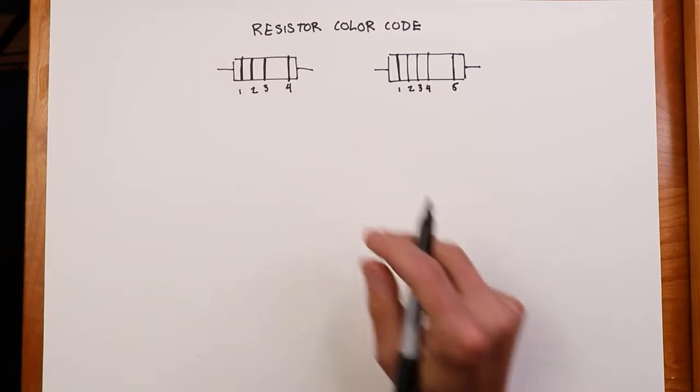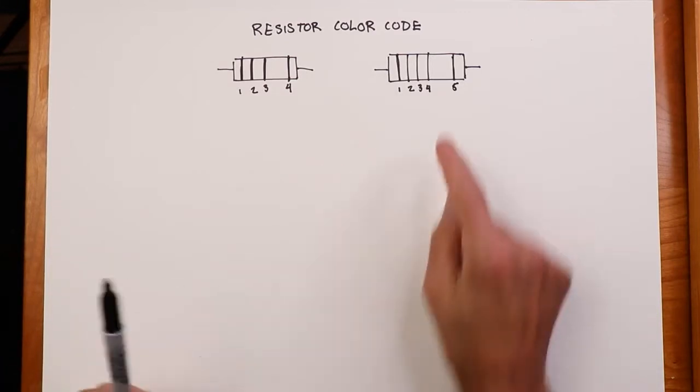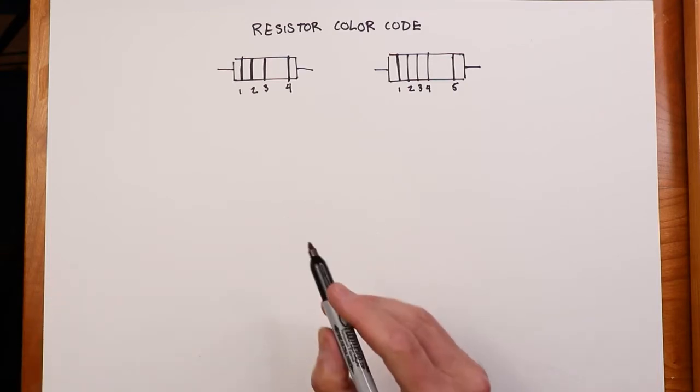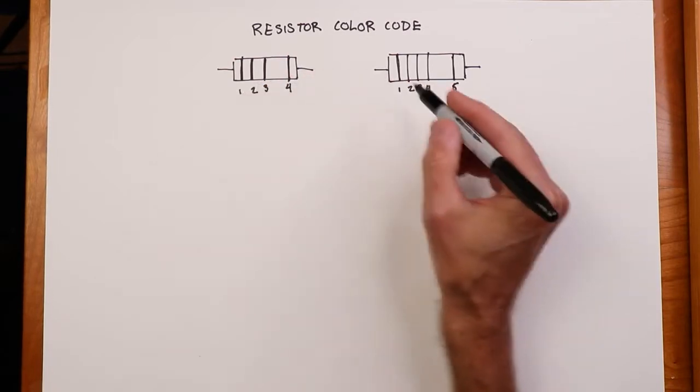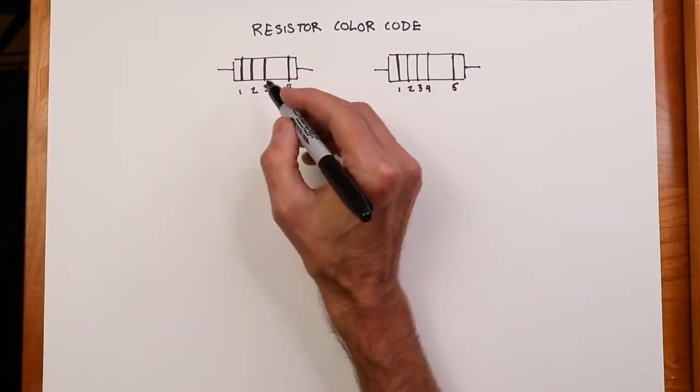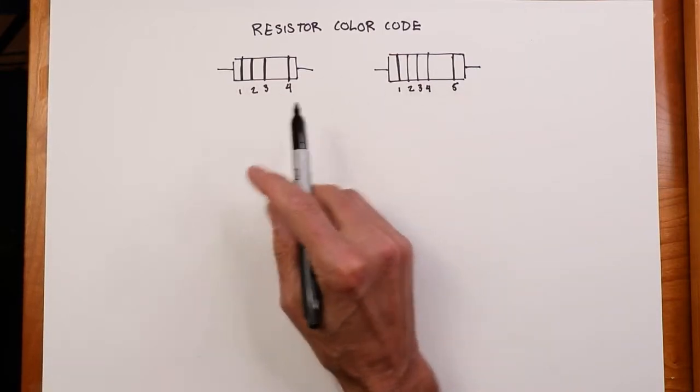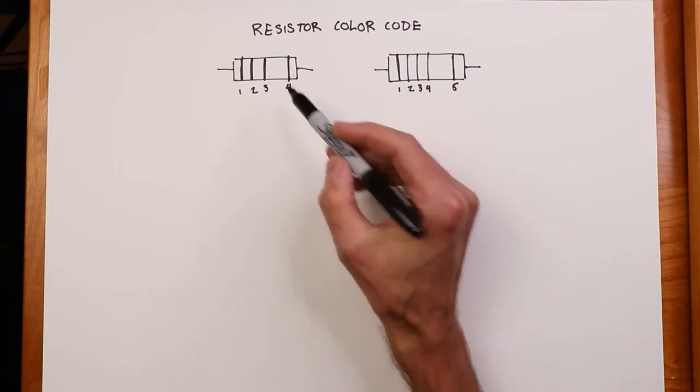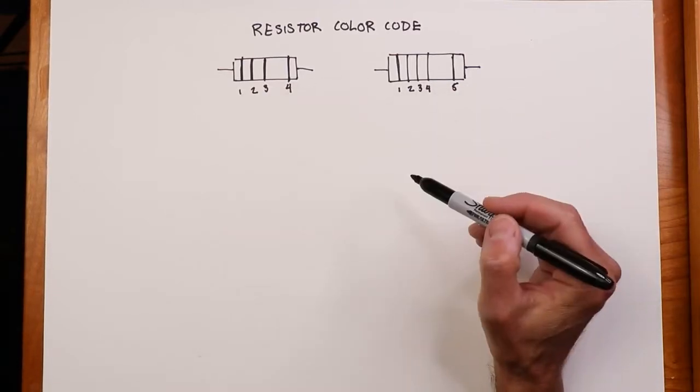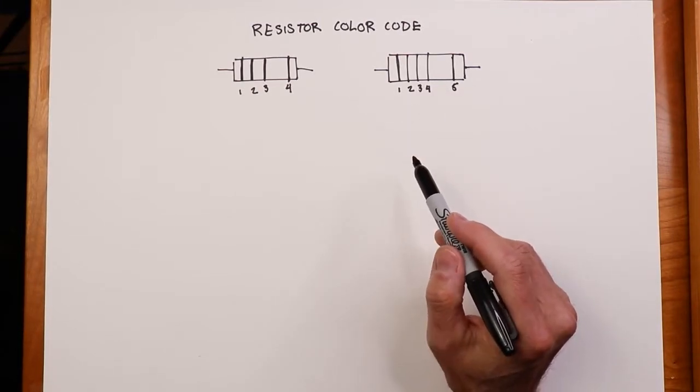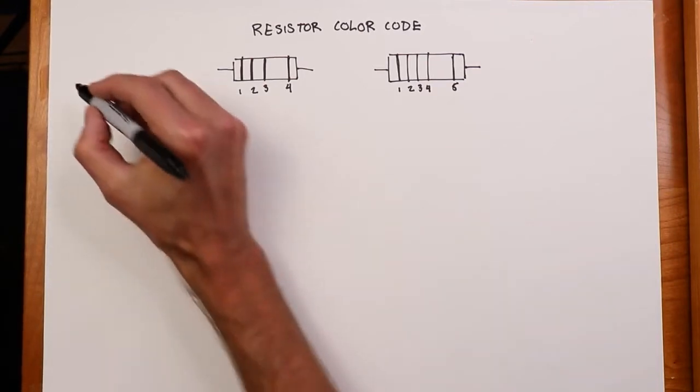You might have, for a higher precision resistor, four bands tied together over here and a fifth band out there. So let's start with this one. This is standard for 20%, 10%, and 5%. This is precision, so we're talking 1% or tighter. The first two, or in this case the first three, are going to give us the precision digits, and then the last one, this third or fourth, will tell us the power of 10 associated with it, and the very last one, the one that's separated over here, will tell us what the tolerance bands are.